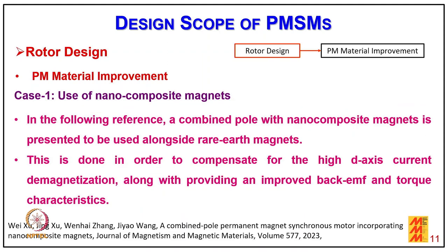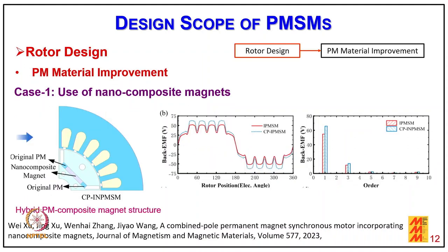Coming to case 1, the use of nano composite magnets: when combining poles with nano composite magnets, they are used alongside rare earth material to compensate for high demagnetization while providing improved torque characteristics. The hybrid permanent magnet composite magnetic structure shows how magnets are placed into the nano composite material and how this affects the flux density in the conductors, along with harmonic analysis of the flux waveform.